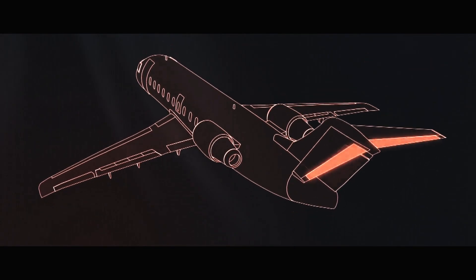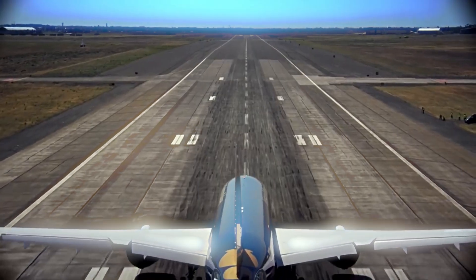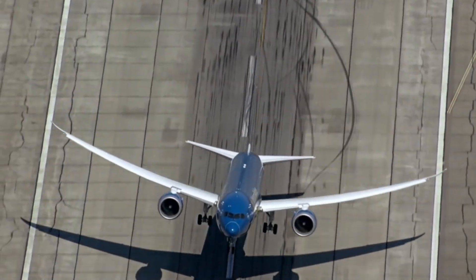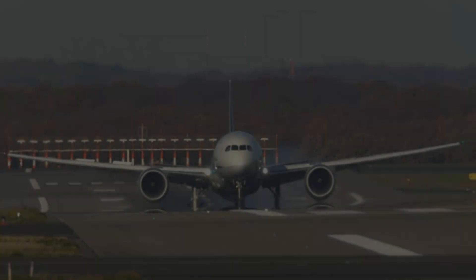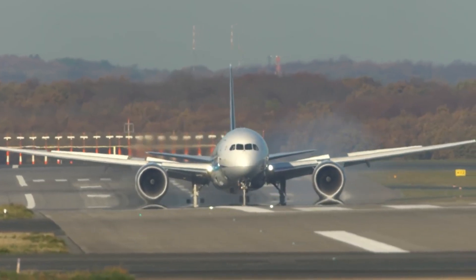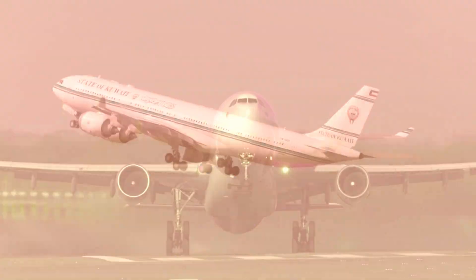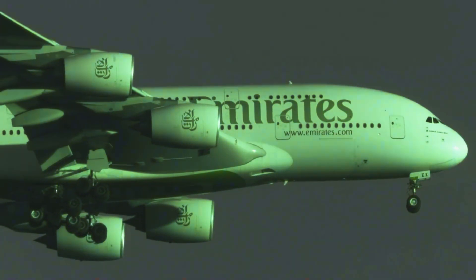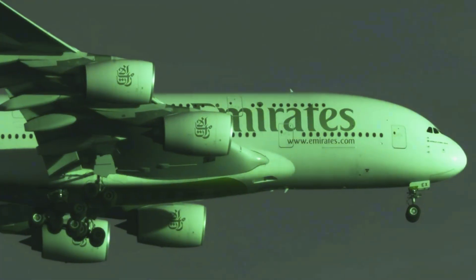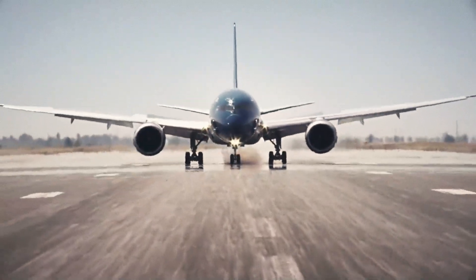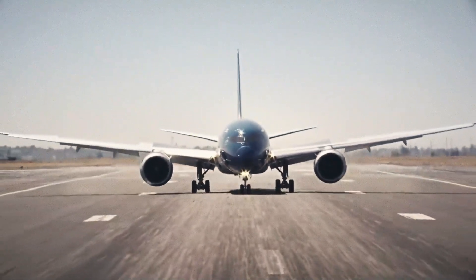secondary flight controls focus on fine-tuning the aircraft's behavior. From enhancing lift during takeoff to minimizing drag and helping with smoother, more controlled landings, these systems make all the difference. Come along as we break down the various types of secondary flight controls, explore their unique roles, and discover how they enhance the aircraft's overall aerodynamic performance.